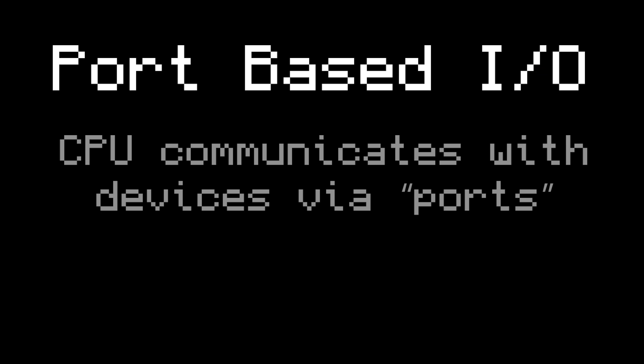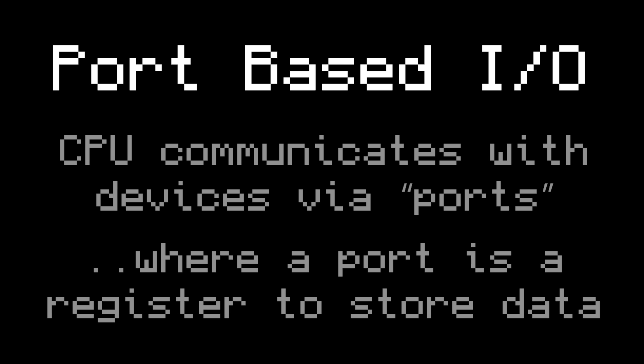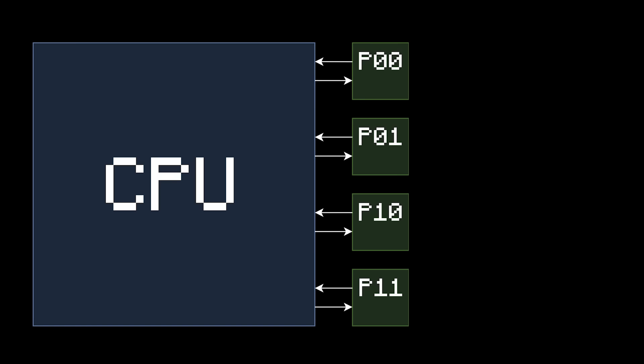Port-Based I/O, also known as Isolated I/O, is where you use ports to talk to external devices. A port is basically just another register, and you can think of it as separate from the main CPU. In general, you can have as many ports as you want, but to keep things simple, let's say you have four ports. If you want to send some data to the outside world, just write it to a port — you can write a 7 to port 1, or a 3 to port 2, whatever you want. Then the devices on the outside can read the ports to access the data.